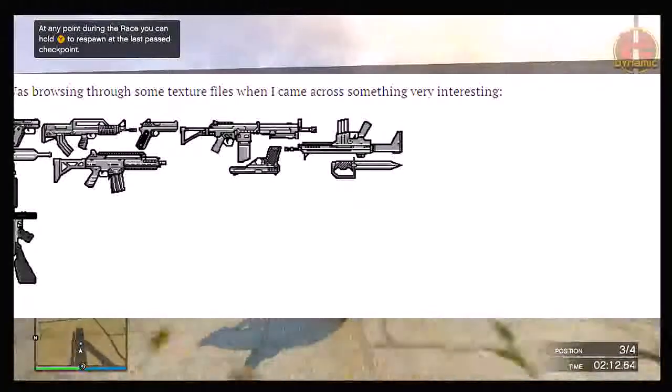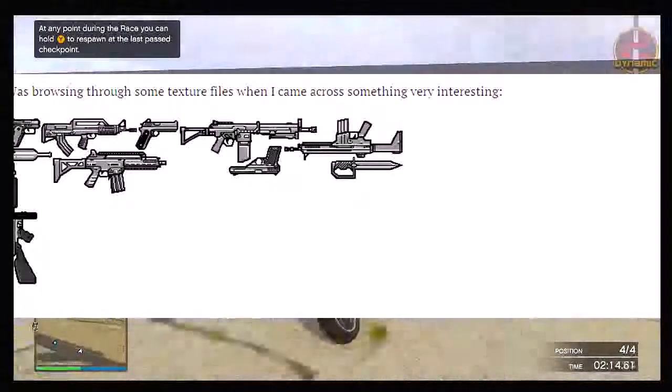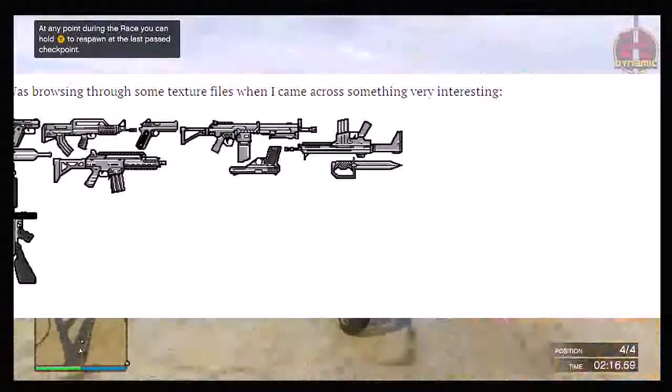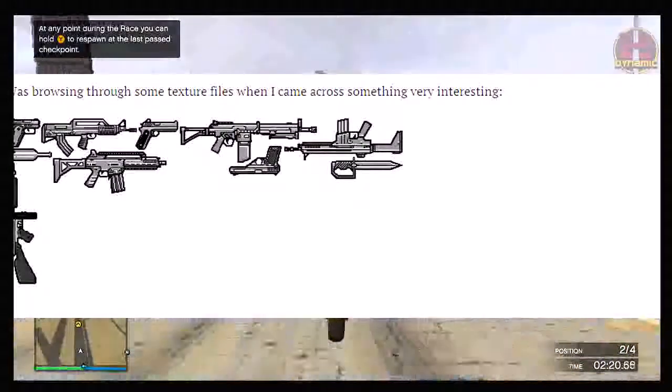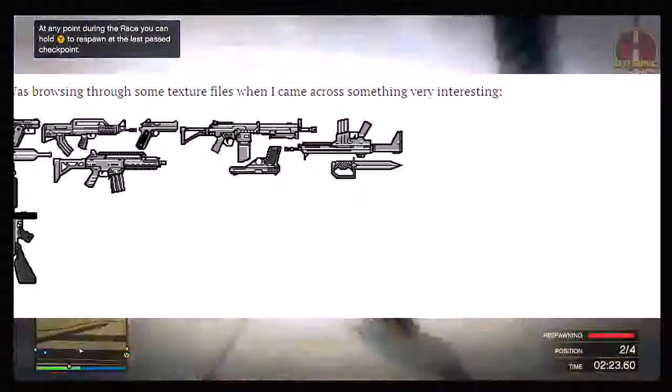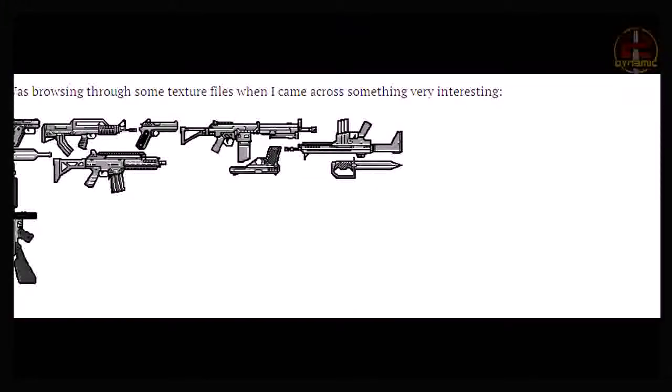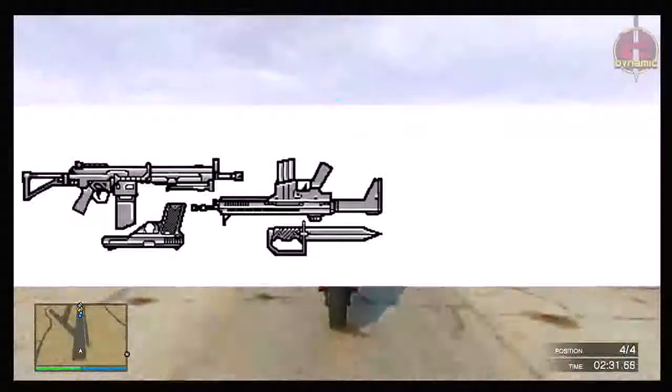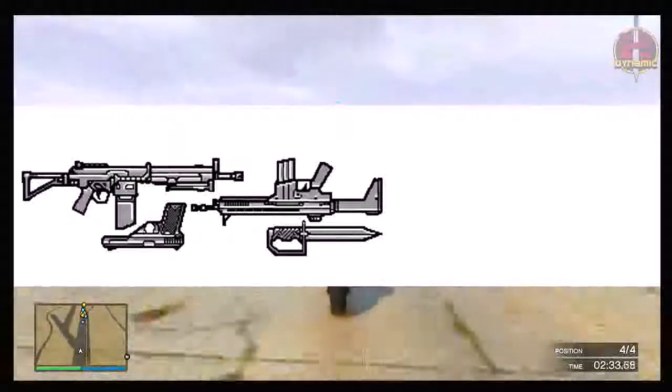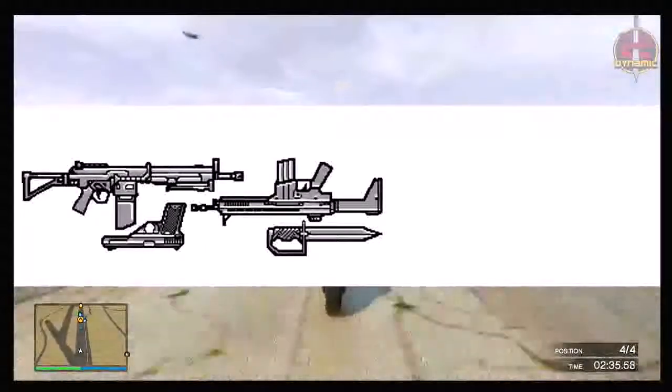As you guys can see on screen right now we have an image of the texture files themselves. We have the normal Gusenberg sweeper, the glass bottle, S&S pistol, bullpup rifle and so on. At the right side of that image you're going to see a close-up. We have what looks to be a scar in the top right, the MG in the top left, the pistol in the bottom left and the knife in the bottom right. These four weapons are currently not in the game but they are in the texture files.